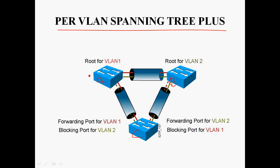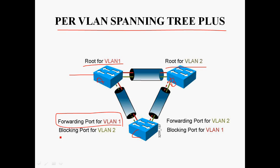In Switch A, VLAN 1 can be assigned as root bridge and VLAN 2 can be assigned as non-root bridge. In Switch B, VLAN 2 can be assigned as root bridge and VLAN 1 as non-root bridge. In Switch C, VLAN 1 and 2 are assigned as non-root bridge. So in Switch C, VLAN 1 port is in forwarding state and VLAN 2 is in blocking state. In Switch B, root bridge is VLAN 2, so the forwarding port is for VLAN 2 and blocking port is VLAN 1.